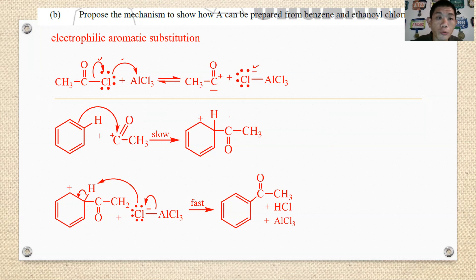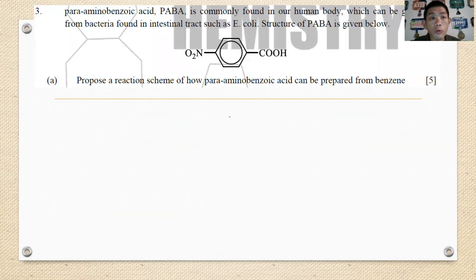These are the step-by-step mechanism of how you should be able to propose whenever you are writing for the mechanism for these reactions. If you want to see more mechanisms including nitration, alkylations, and also halogenation, you can visit my YouTube for more information. Then we go to question number three. Para-amino benzoic acid PABA is commonly found in our human body which can generate from bacteria found in the intestinal tract such as E.coli. So this is the PABA.